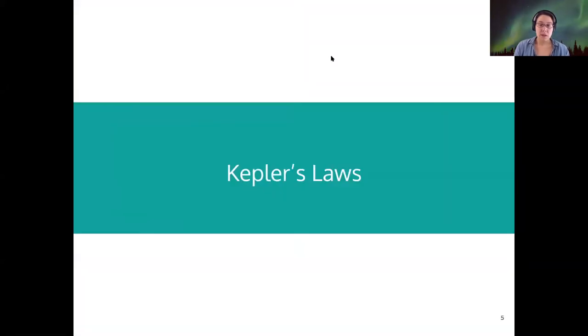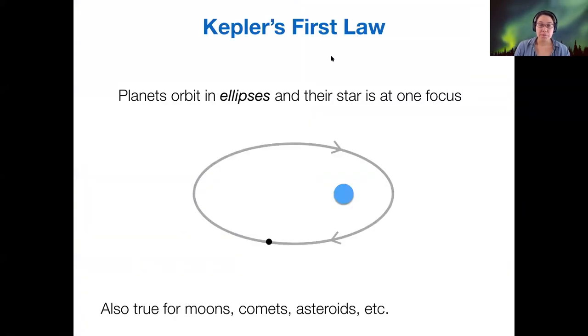All right. So starting out with Kepler's laws. Kepler had three laws. Kepler was doing astronomy in the 1600s using the data gathered by Tycho Brahe, who is a very interesting and strange person in astronomy history. What Kepler was able to do was tie together all of the observations of the orbits of the planets into a set of three laws to describe their motion completely.